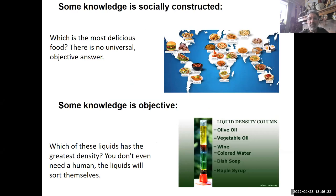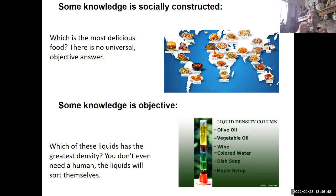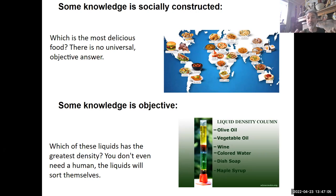Some knowledge is socially constructed — like what's the best food? We all have different opinions. But some knowledge is factual and objective. If I ask you to compare the densities of different liquids, I can pour them into a graduated cylinder and they'll sort themselves out — lightest on top, densest at the bottom. That's a truth determined by the universe, not our subjective opinion.